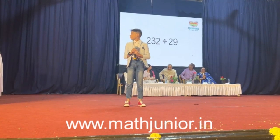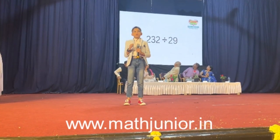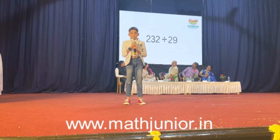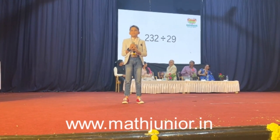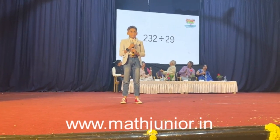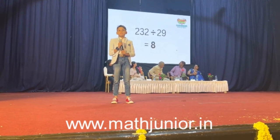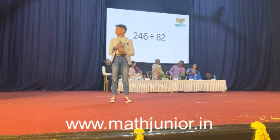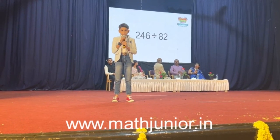232 divided by 29: 8. Very good. You will round up a pass for surrender. 246 divided by 82: 3.